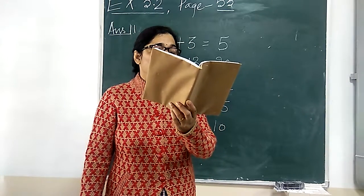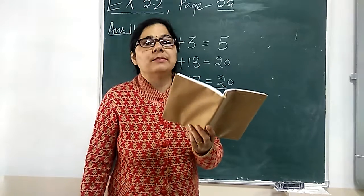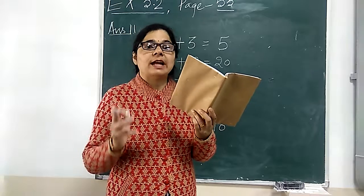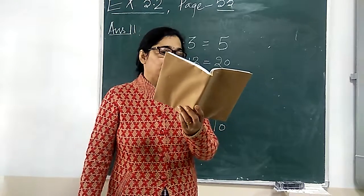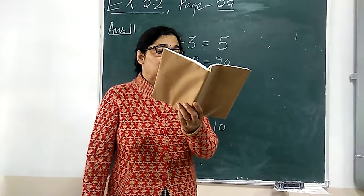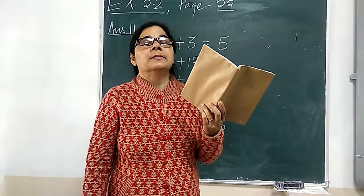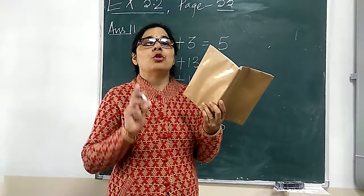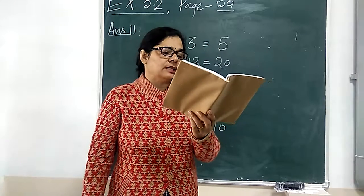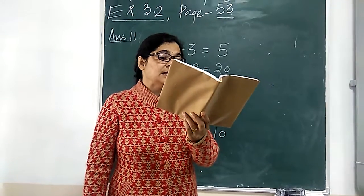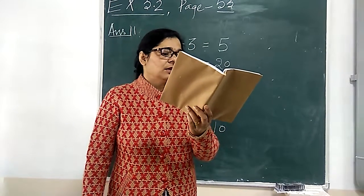a number which has only 2 factors is called a prime number. A number which has more than 2 factors is called a composite number. One is neither a prime number nor a composite number.